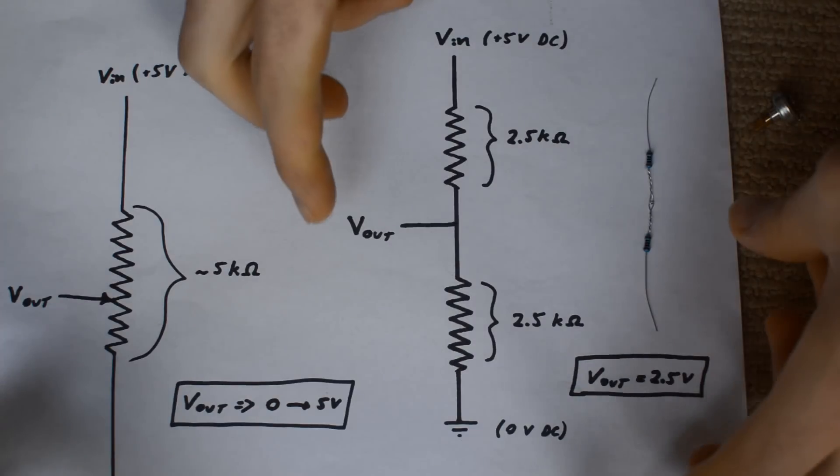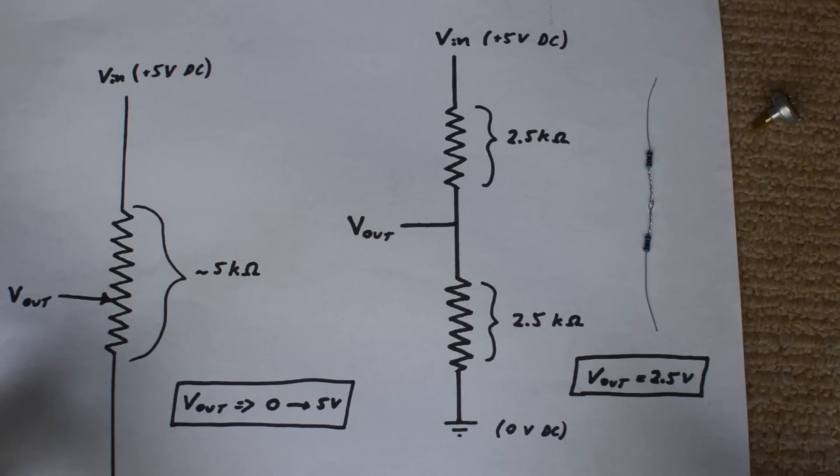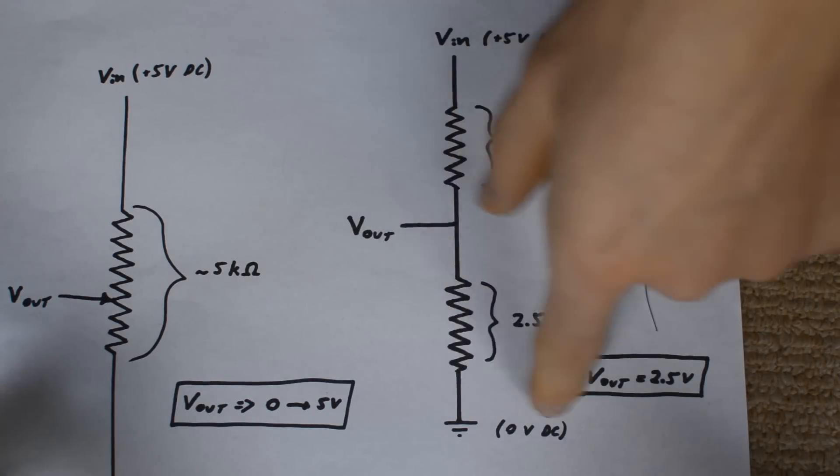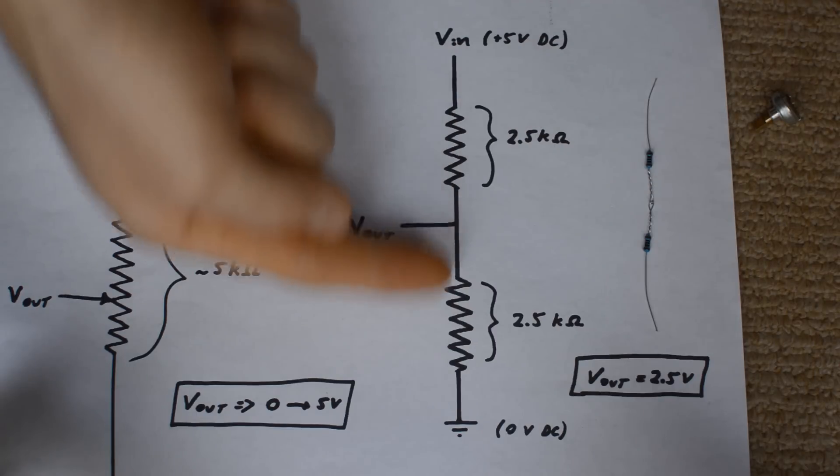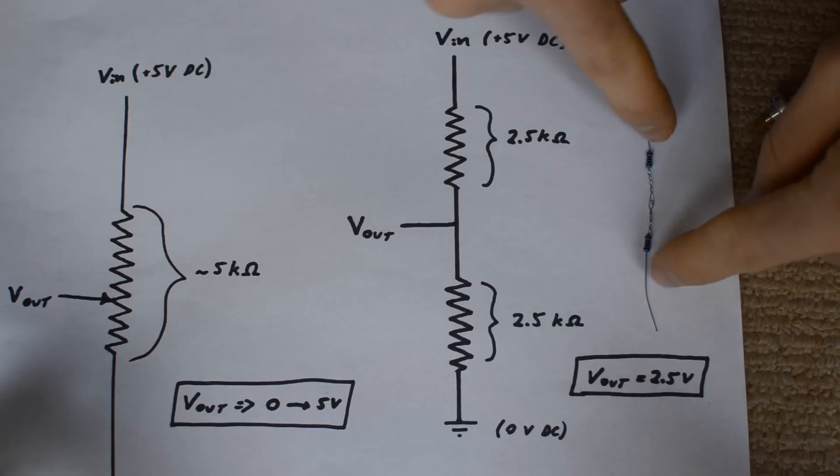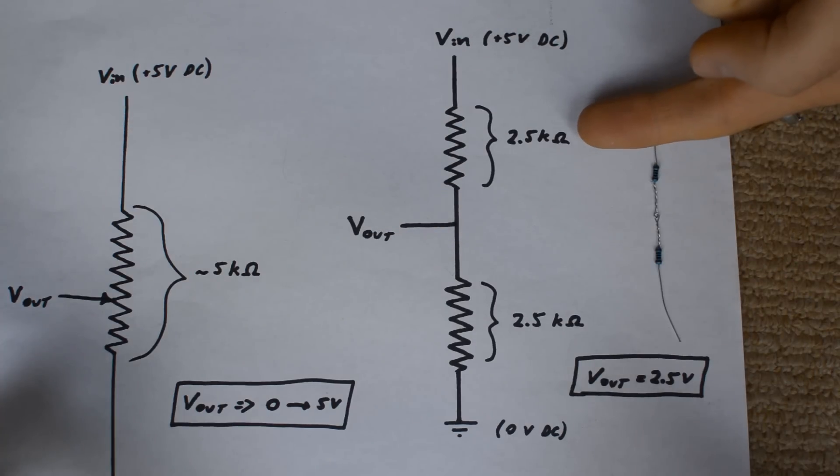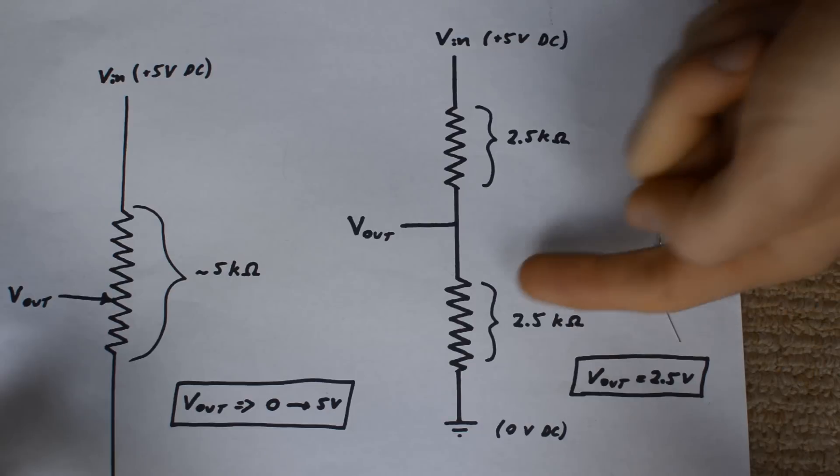A voltage divider can be thought of as a fixed potentiometer. You've got the same three pins: you've got a V in, a V out, and a ground pin down here. But this time, this V out pin can't sweep back and forth, so it's fixed between two known resistances. If these resistances are the same—in this case I've chosen 2.5 kilo ohms and 2.5 kilo ohms—if you add those together you get five kilo ohms.